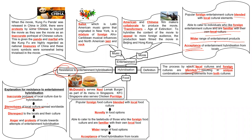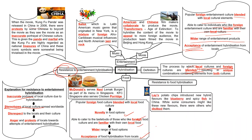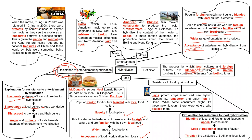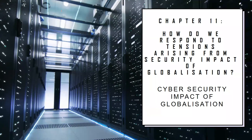For example, Lays introduced hybrid flavors like blueberry and spicy fish — some people like them, others dislike them. People may resist hybridized food because they feel it is not traditional, and mixing it with foreign elements does not preserve local culture. Just as mixing Chinese and American movies raises questions about whether Chinese culture is truly preserved, hybrid food also raises the question: is it really still the local food, or has it been altered too much? That brings us to the last chapter — the security impact of globalization.